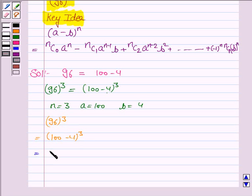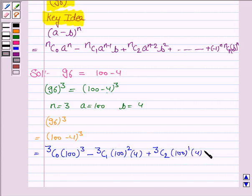Using the expansion, this equals ³C₀(100)³ minus ³C₁(100)²(4) plus ³C₂(100)(4)² minus ³C₃(4)³.